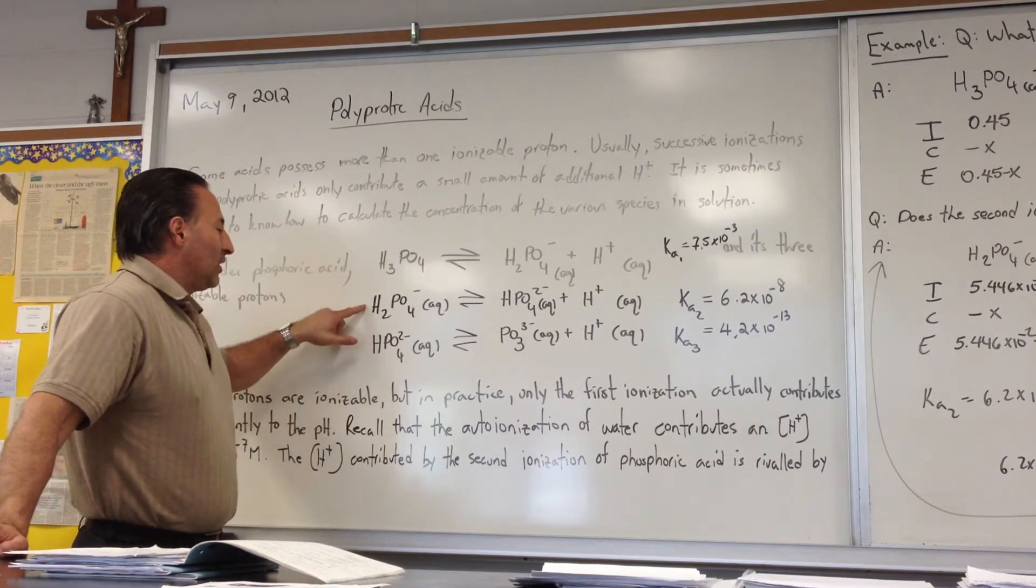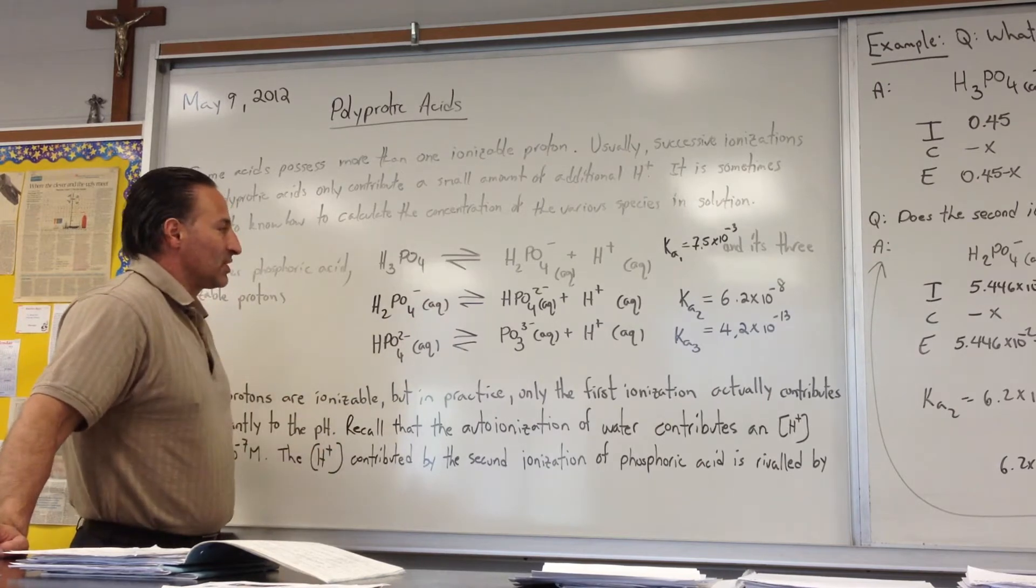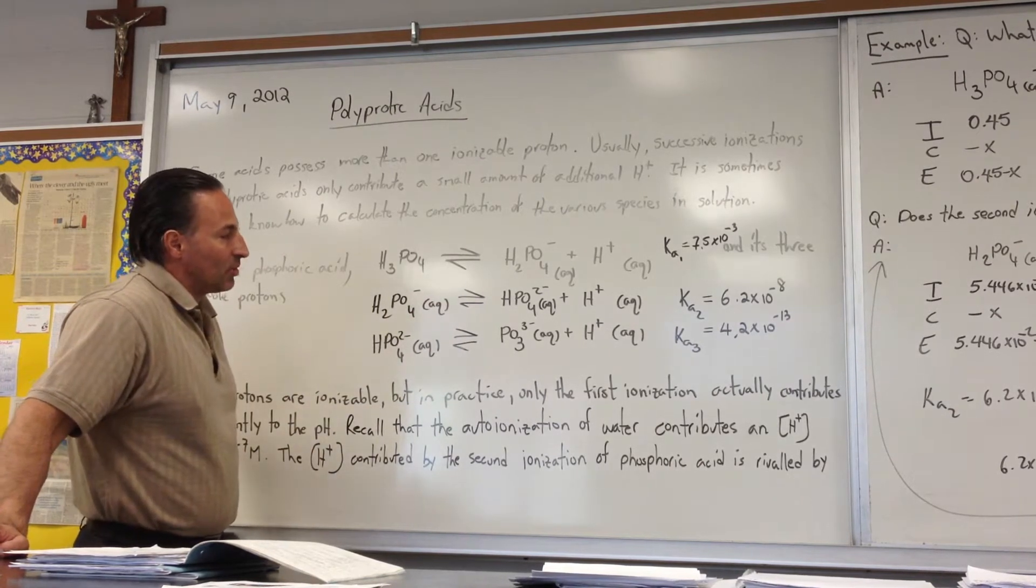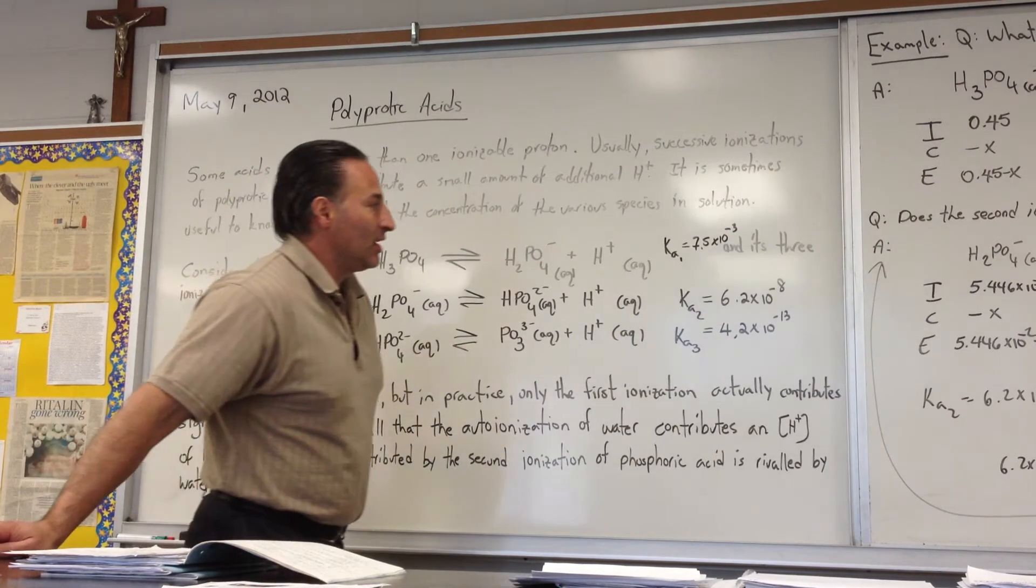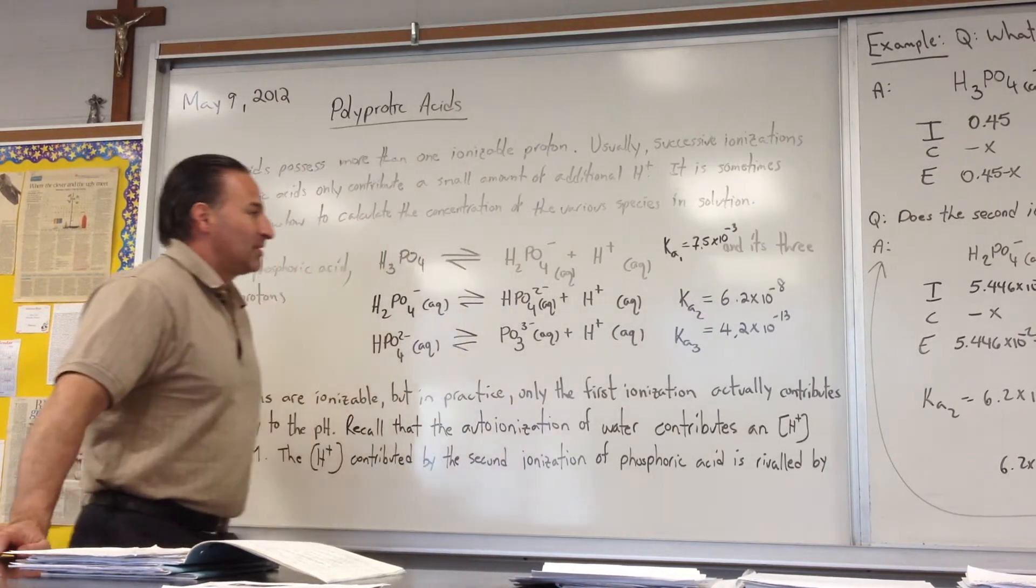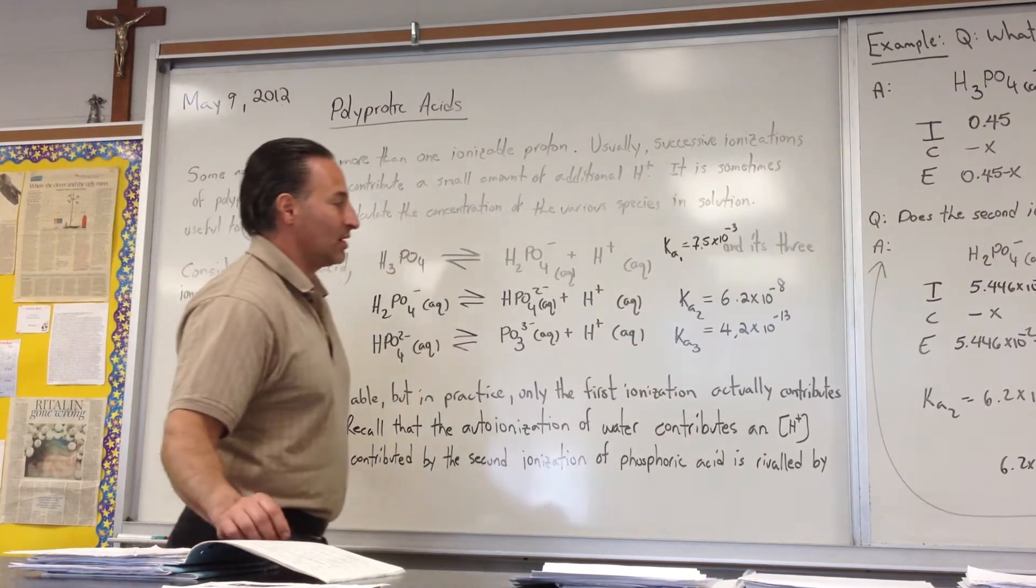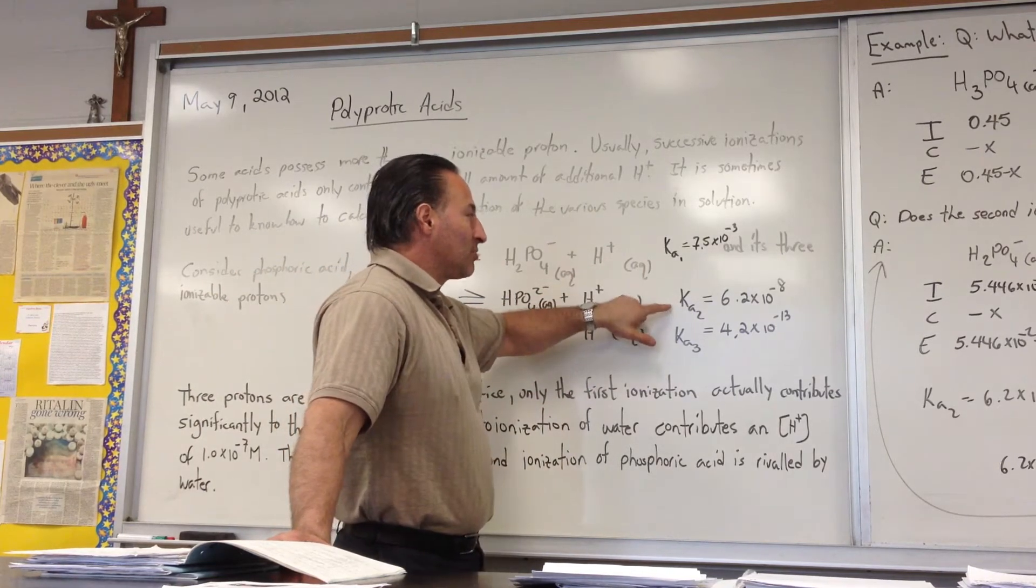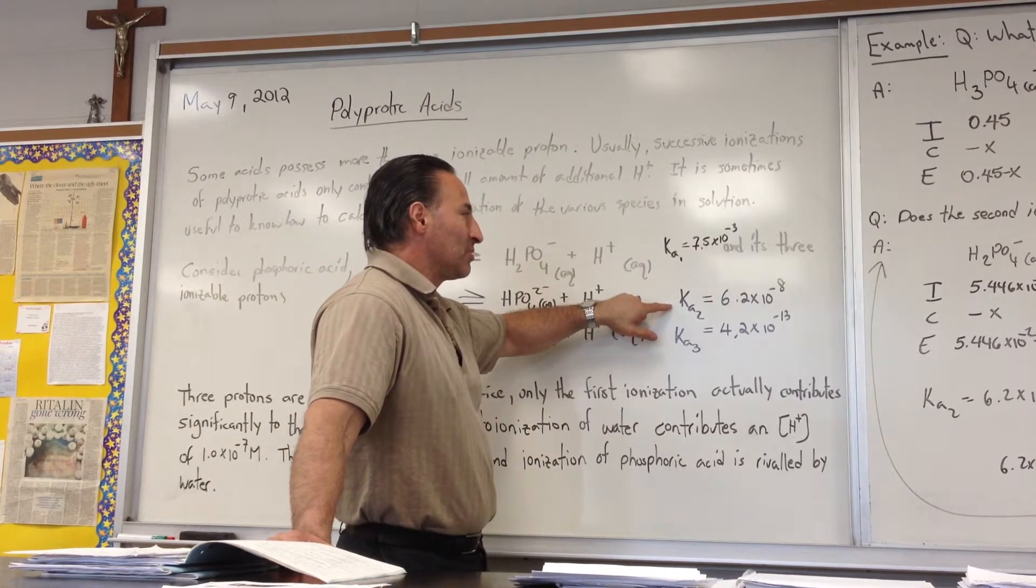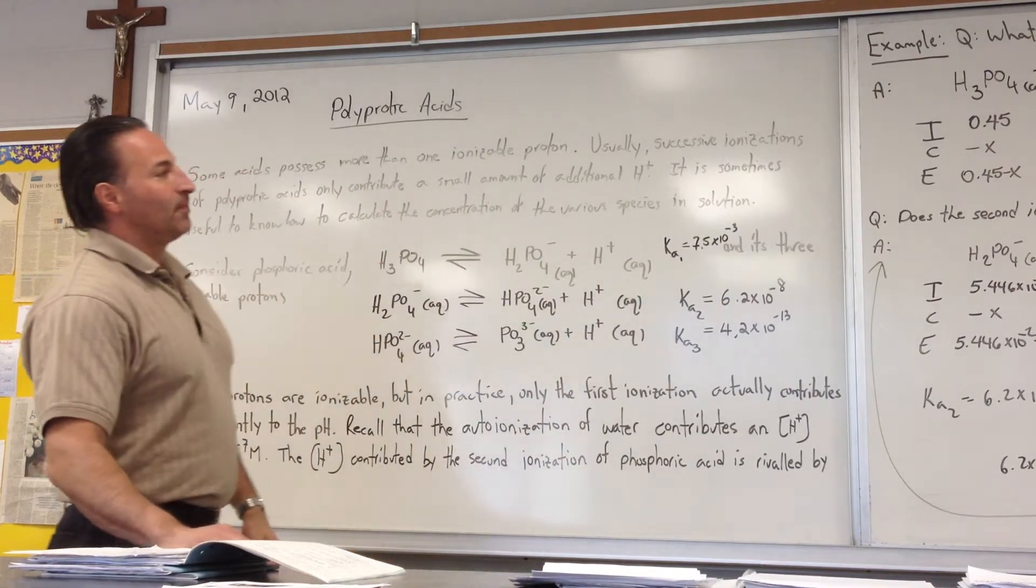Then the dihydrogen phosphate ionizes to become hydrogen phosphate and it releases another proton. But you'll notice now that the Ka sub 2 value, the second ionization constant, is a hundred thousand times smaller: 6.2 times 10 to the minus 8. So right away we can tell that the amount of hydrogen ion that's going to be released from the second ionization is going to be so small compared to the first ionization that it's likely to be insignificant.